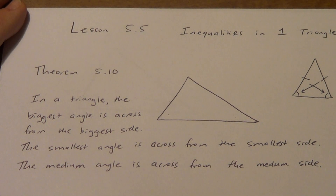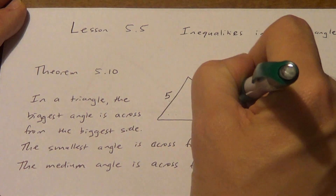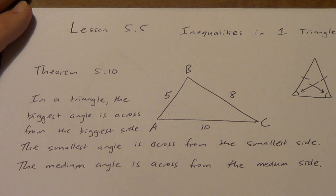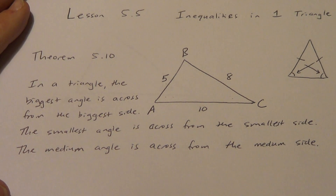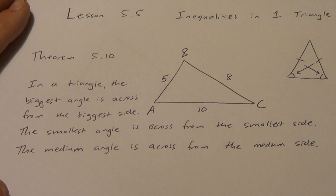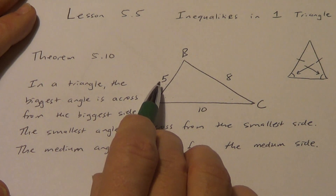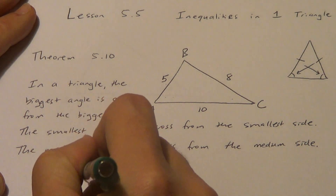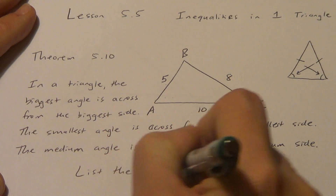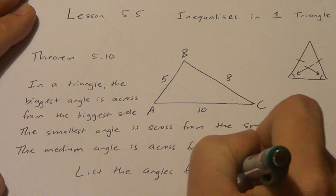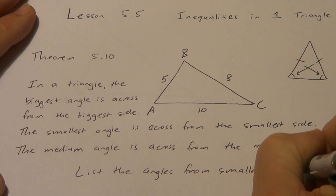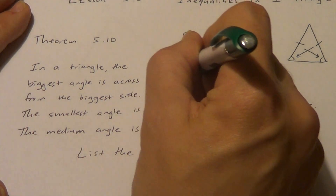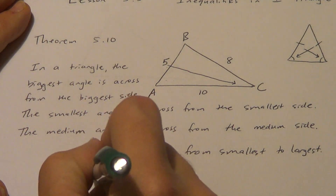Let's take a look at a triangle with sides 5, 8, and 10, and I'll call the vertices A, B, and C. We're going to figure out which angle is the biggest and which is the smallest. Starting with the smallest side — 5 — we work across from it, and it points over to angle C, so angle C is the smallest angle.